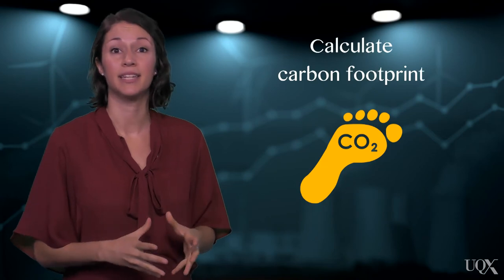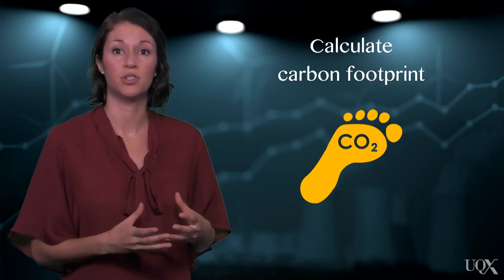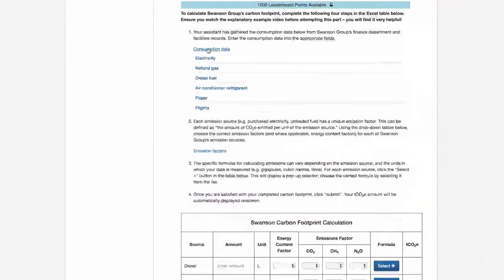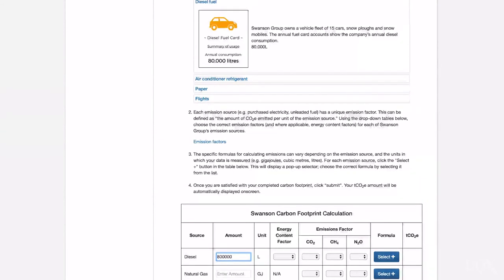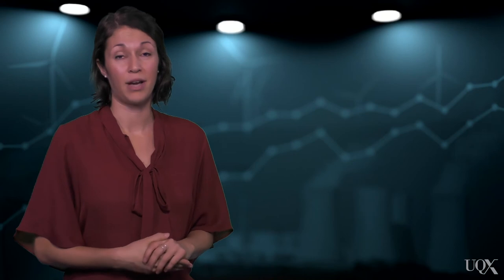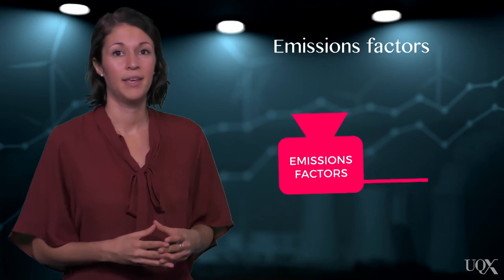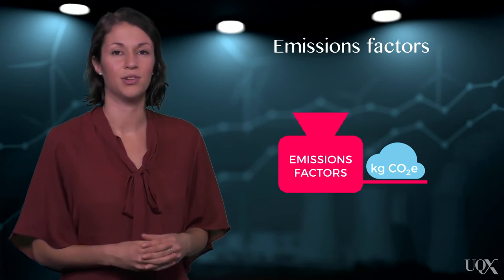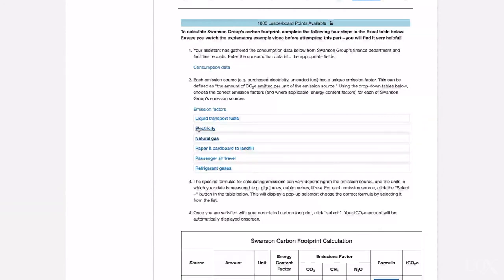Now we're getting to the most critical part of the carbon footprinting activity: calculating the company's greenhouse gas emissions. This requires you to first collect activity data for each emission source, such as litres of fuel or kilowatt hours of electricity used. In Carbon 101X, you're given this data and just need to input the values into the correct field in the calculation table. Next, you need to identify which emissions factors to use to convert your activity data into an emissions estimate. Emissions factors are usually issued by governments or international bodies, such as the World Resources Institute.